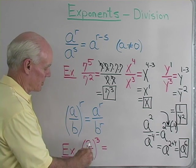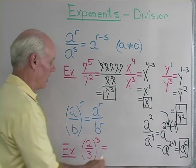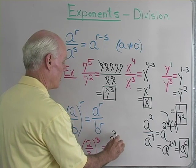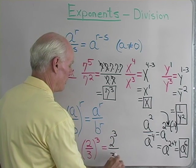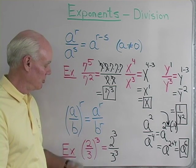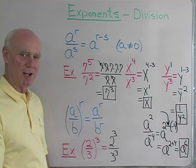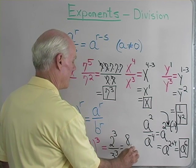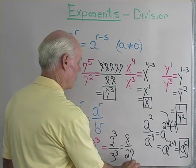So let's start with a simple problem, 2 3rds to the 3rd power. Well, I can write that if I want as 2 to the 3rd over 3 to the 3rd because that's what this property tells me I can do to an expression like this. Now to simplify, that's just going to be 8 divided by 27.